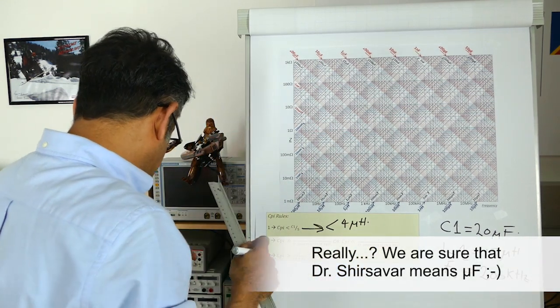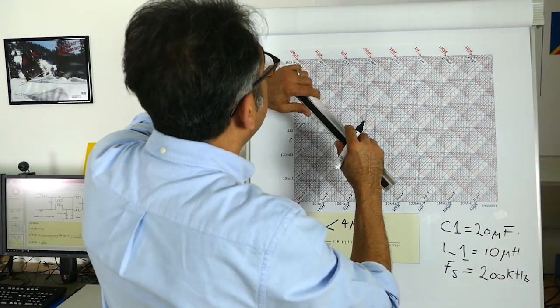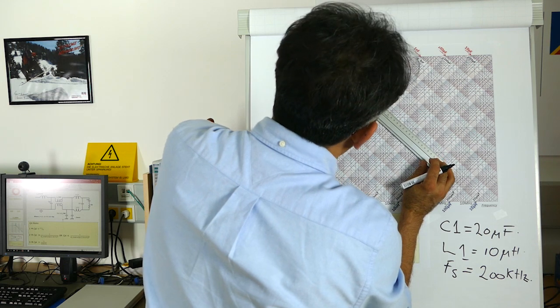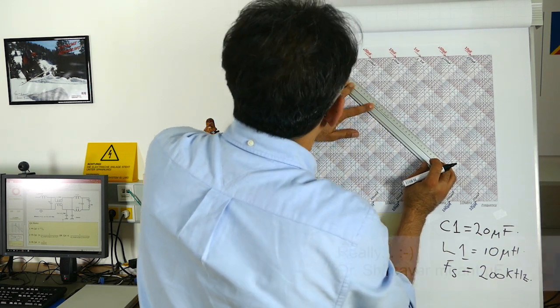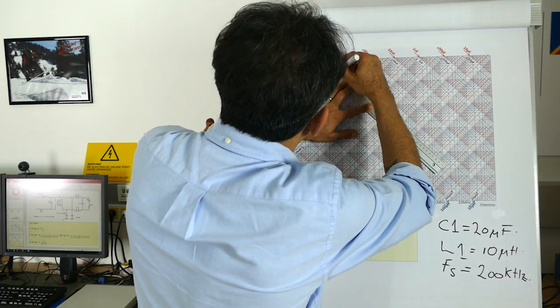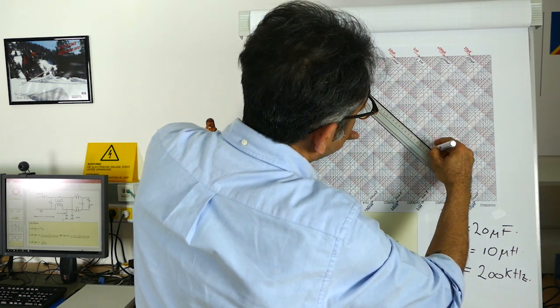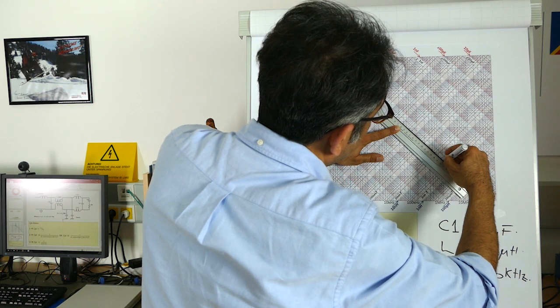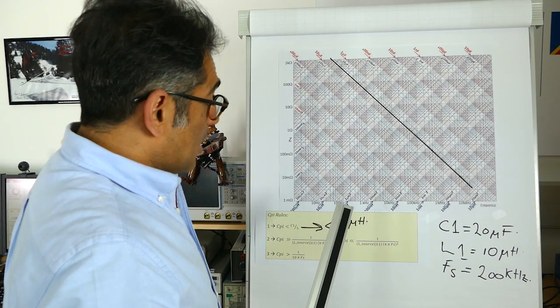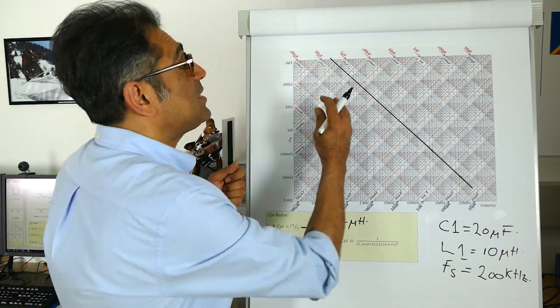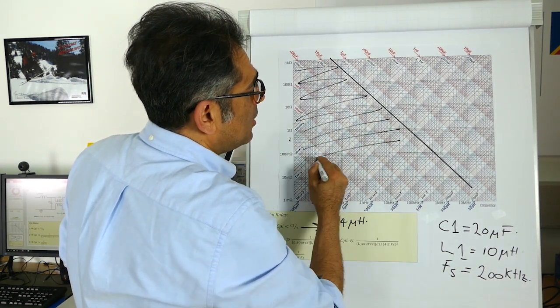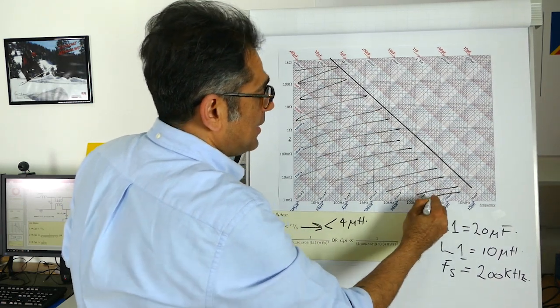I take my ruler, I find 4 microfarads, that's 2, that's 3, that's 4 microfarads. Sorry, beg your pardon, microfarads. And I draw a line down here. And I know that this capacitor must be smaller than 4 microfarads. So it cannot be in any of this region. So I can immediately cross out all of this region here to show that my capacitor cannot be bigger than this.